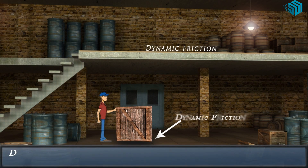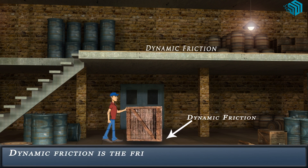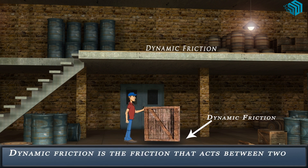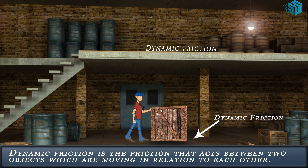Dynamic friction is the friction that acts between two objects which are moving in relation to each other. For example, it is the force that makes pushing a heavy box.